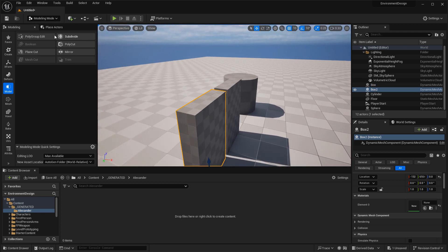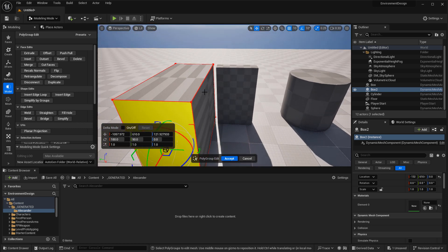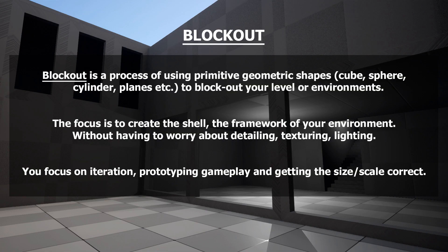In this video I'm going to show you three different methods for how to block out your environments or level designs inside UE5. If you're not familiar with blockouts, it is a process of using simple geometric shapes such as a cube, sphere, cylinder, or plane to create the initial shell, the framework, the blueprint of your game world. This way you can prototype very quickly without worrying about adding detail, texturing, or creating materials, and just jump in and test gameplay mechanics.